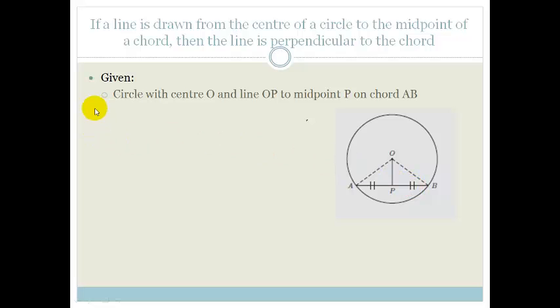So what we do, and I've already done it on this drawing, is we construct lines OA and OB. And the reason we do that is because now if you look at it carefully, you can see you've got two beautiful triangles. We've got OPA and we've got OPB.